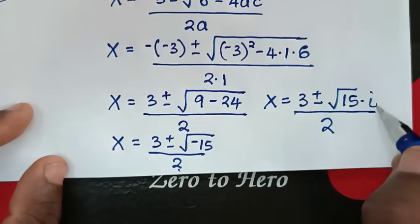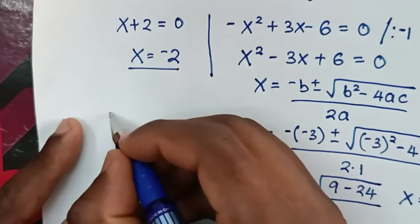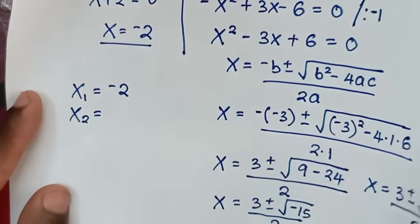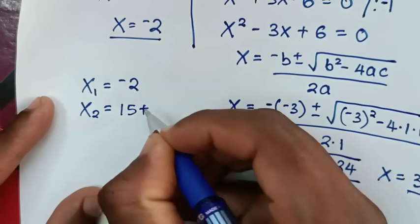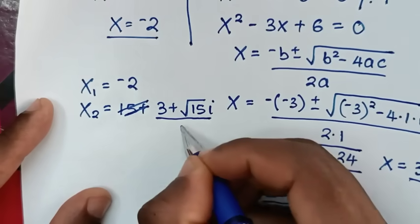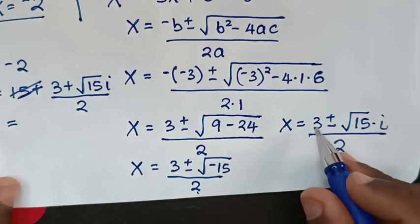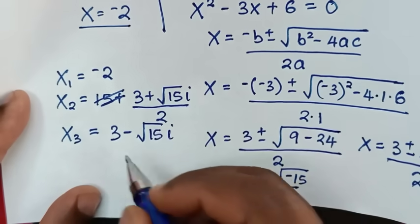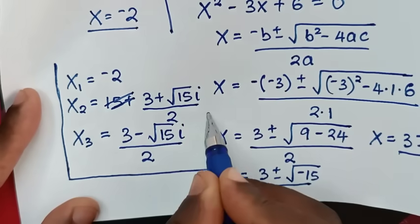We have two complex solutions from this because of the imaginary unit i. Therefore all three values of x are: the first is x equals negative 2, the second is x equals 3 plus square root of 15 times i, all over 2, and the third is x equals 3 minus square root of 15 times i, all over 2.